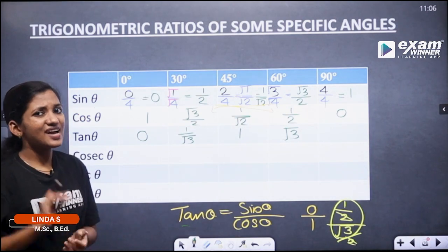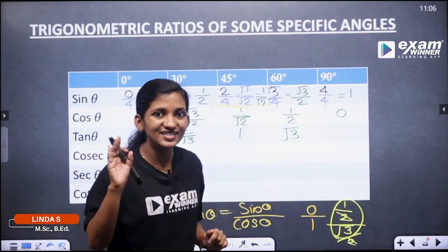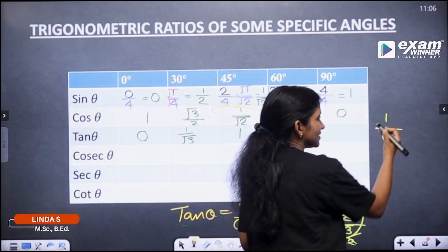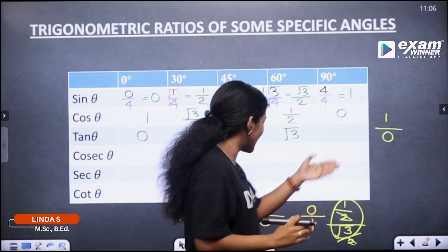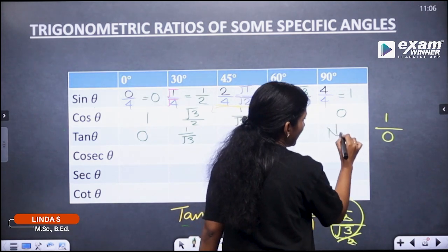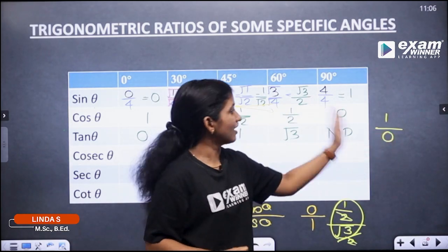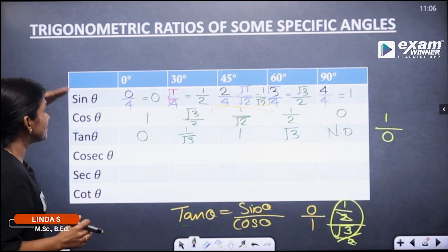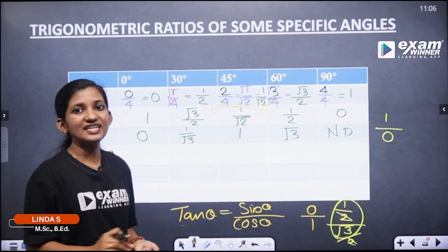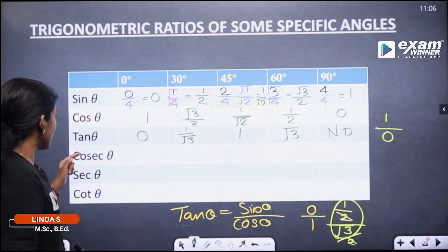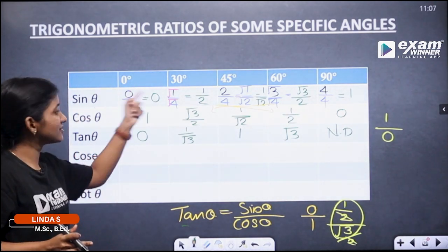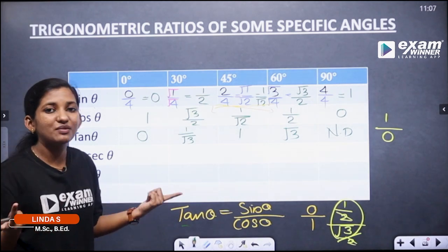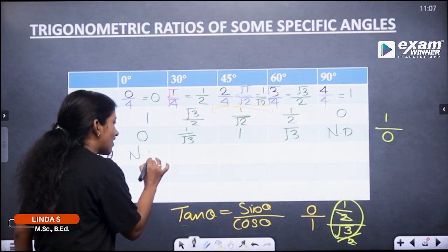Next, tan 60° equals sin 60° / cos 60° = (√3/2) divided by (1/2). The 2s cancel, so tan 60° = √3. Next, tan 90° equals sin 90° / cos 90° = 1 divided by 0, which is not defined. So tan 90° is not defined, because 1 by 0 is undefined.